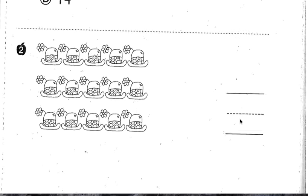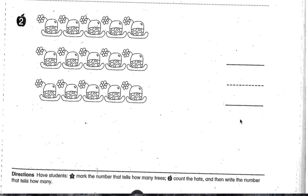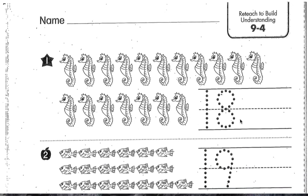Then I would like for you to flip your paper over. On the other side you should see some seahorses, and you'll still be on 9-4. Put your name at the top. Look at the seahorses — let's count them: 1, 2, 3, 4, 5, 6, 7, 8, 9, 10, 11, 12, 13, 14, 15, 16, 17, 18. There are 18 seahorses.